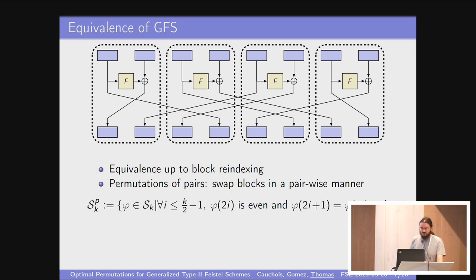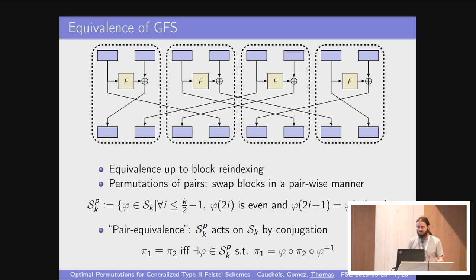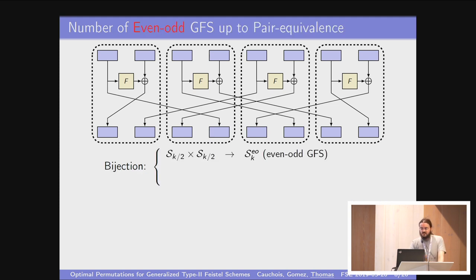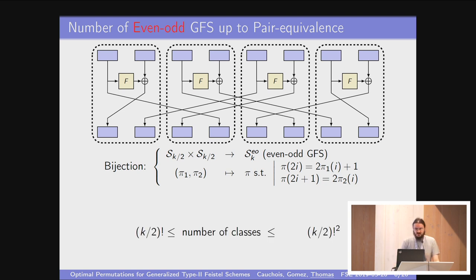Just for the notation, I call this set SKP. K is the number of blocks, and P is for pair. We have a notion of pair equivalence: PI1 and PI2, the two permutations here, are equivalent if and only if they are conjugated with each other with one of these pair equivalent permutations. So how many permutations do we have up to this notion of equivalence? If you have an even-odd permutation, you can write it as two smaller permutations over K over two elements. The first one tells you where you send the even elements, and the second tells you where you send the odd elements.